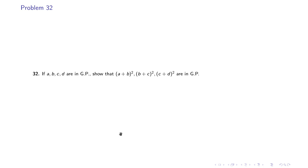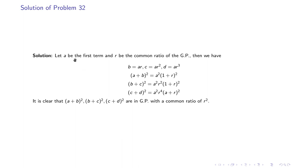Problem 32: if A, B, C, D are in GP, show that (A+B)², (B+C)², (C+D)² are in GP. Let A be the first term and R the common ratio, so B = AR, C = AR², D = AR³. Then (A+B)² = A²(1+R)², (B+C)² = A²R²(1+R)², and (C+D)² = A²R⁴(1+R)².